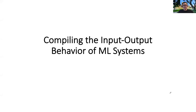Welcome back to 264A Automated Reasoning. Today we will be talking about compiling the input-output behavior of some machine learning systems into symbolic representations. We've seen last time what one may do if one is successful in capturing the input-output behavior of a machine learning system symbolically — looking at explaining decisions, finding the culprit behind decisions, MC explanations, and PI explanations, which we also called sufficient reasons. We also saw how that can be used in reasoning about decision bias and the robustness of decisions and classifiers.